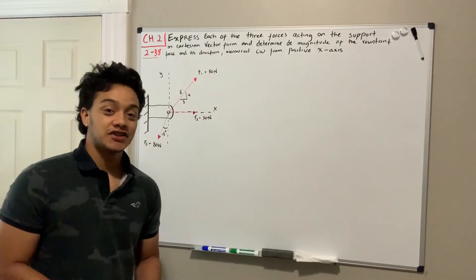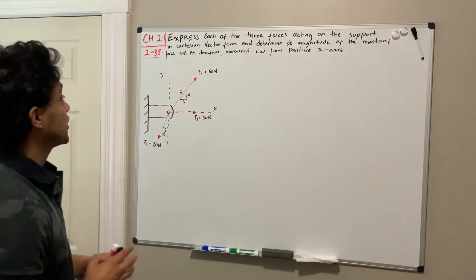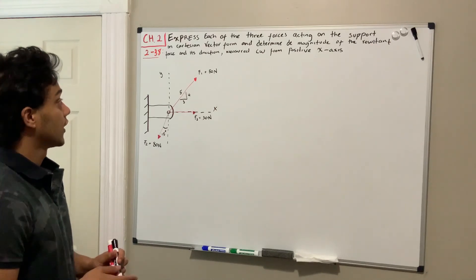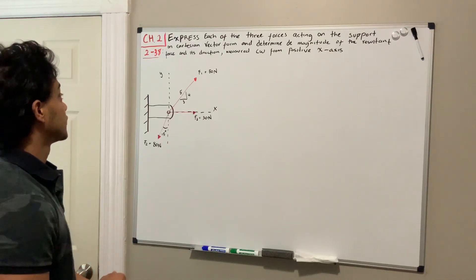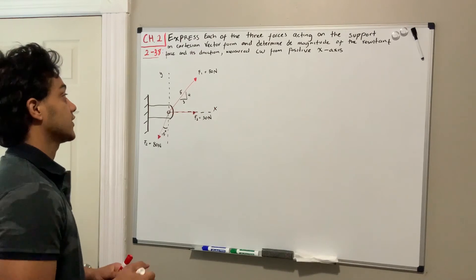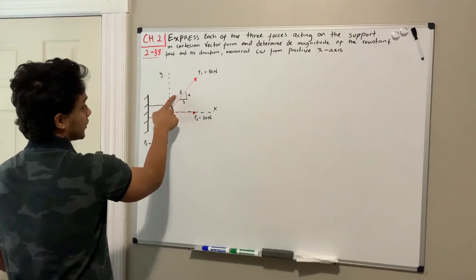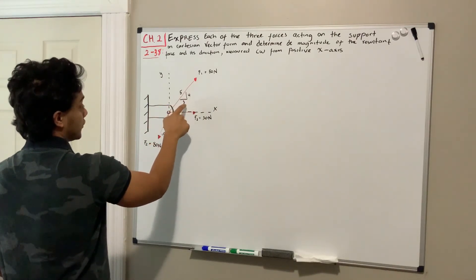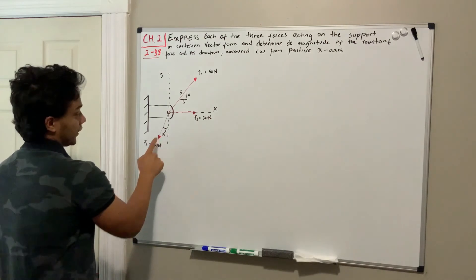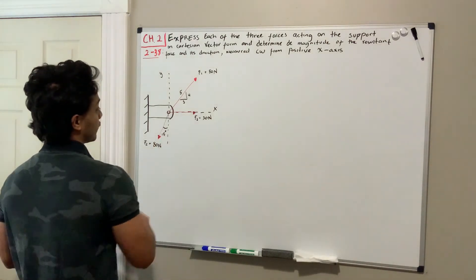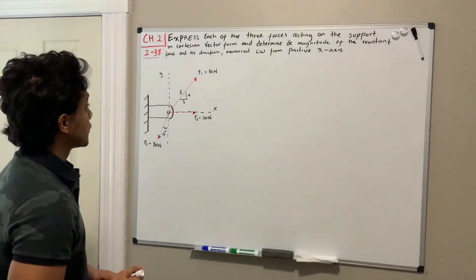Hey, welcome back everyone to Learning by Teaching. We're in Statics and we're going to do problem 2-38. It says express each of the three forces acting on the support in Cartesian vector form and determine the magnitude of the resultant force and its direction measured clockwise from the positive x-axis. We have three forces: F1 is 50 Newtons described by a 3-4-5 triangle, F2 is 80 Newtons with an angle, and F3 equals 30 Newtons acting along the x-axis.